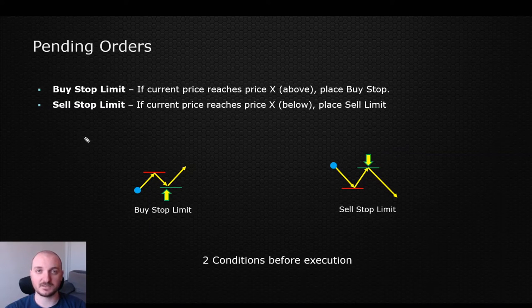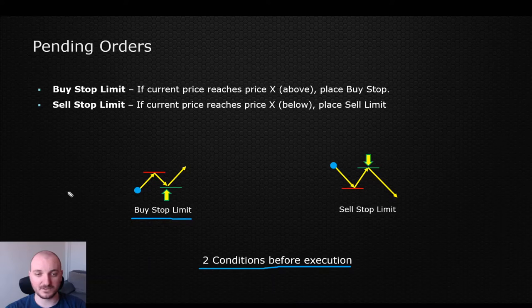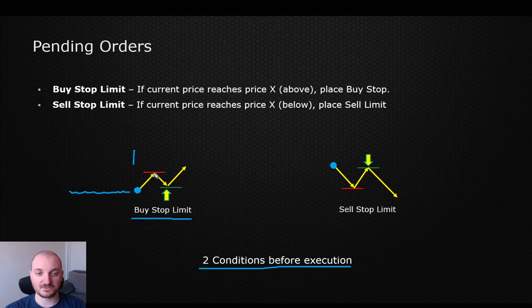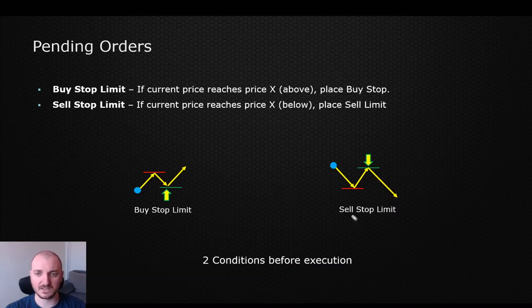Now the more interesting part comes with the new orders introduced in MT5, namely the buy stop limit and the sell stop limit. In very simple terms, we can think about these two orders as two-condition orders. We need to see two things happening before the order is actually executed. When it comes to buy stop limit, for example, imagine this is the current price and what we are telling the MT5 platform is: first, wait for the price to go and reach that level — condition number one — then let the price move lower a bit, reach that zone, and only then execute my buy trade.